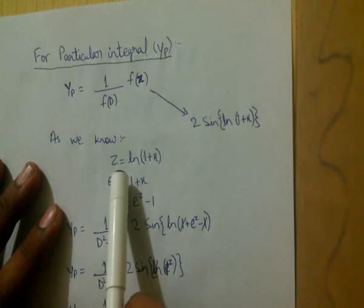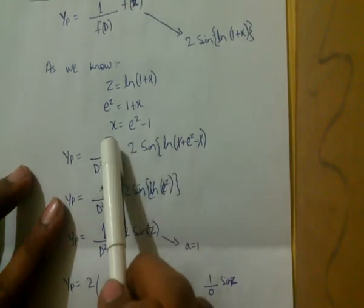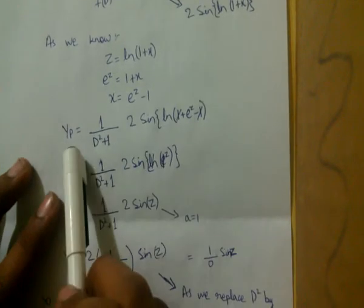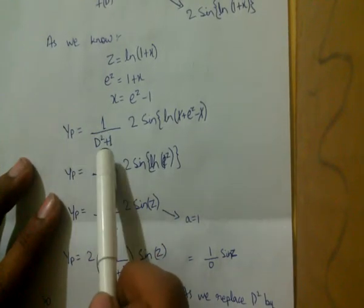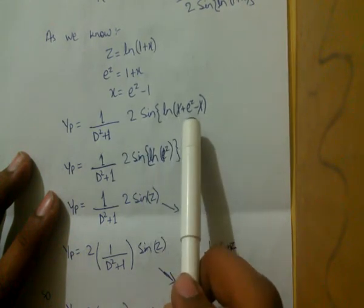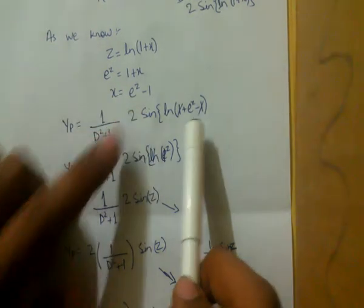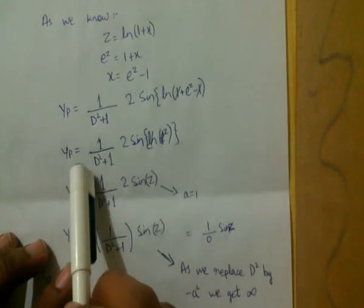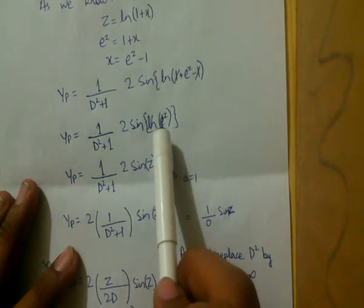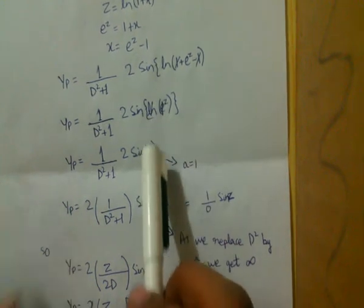We know z = ln(1 + x), so eᶻ = (1 + x), meaning x = eᶻ − 1. Thus yp = [1/(D² + 1)]·2·sin(ln(1 + eᶻ − 1)). The 1's cancel, giving yp = [1/(D² + 1)]·2·sin(ln(eᶻ)). Since ln and exp are inverses, ln(eᶻ) = z, so yp = [1/(D² + 1)]·2·sin z.